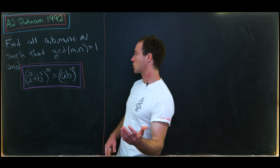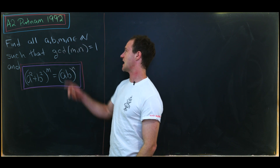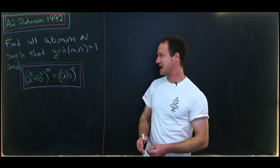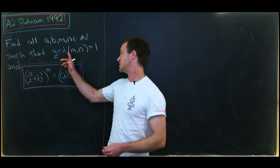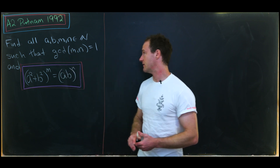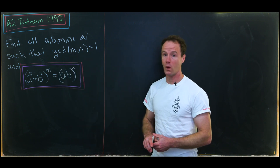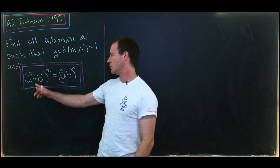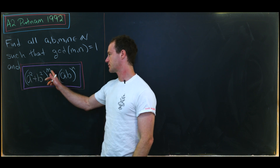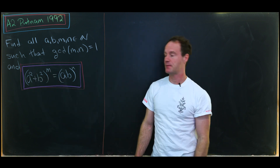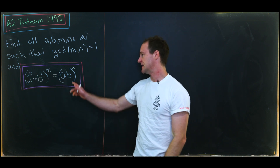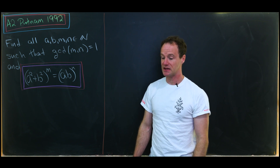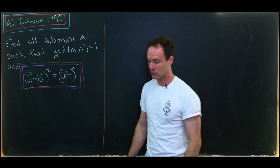Our goal is to find all natural numbers A, B, M, and N such that the GCD of M and N is 1 — so they're relatively prime — and then we also have (A² + B²)^M equal to (AB)^N.